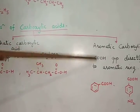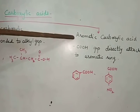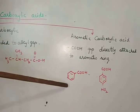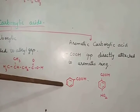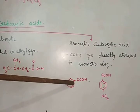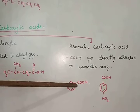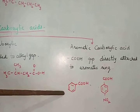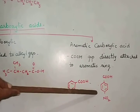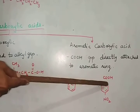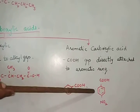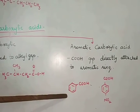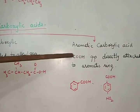In aromatic carboxylic acids, an aromatic ring is directly attached to the COOH group. For example, benzoic acid has a benzene ring directly bearing a COOH group. Similarly, para-nitrobenzoic acid (4-nitrobenzoic acid) has both a nitro group and a COOH group on the benzene ring. Both are examples of aromatic carboxylic acids.